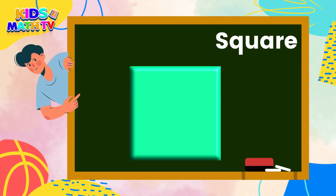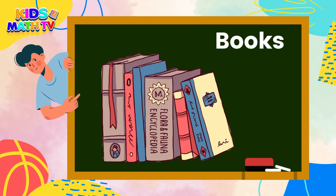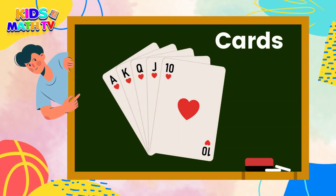Squares have four equal sides and look like a box. Squares can be found in many things around us, such as books, windows, tiles, and playing cards. Squares can be stacked on top of each other to create taller objects, like buildings or towers.